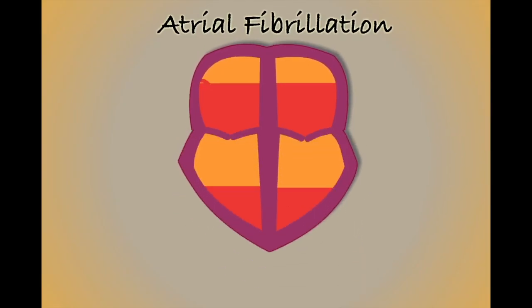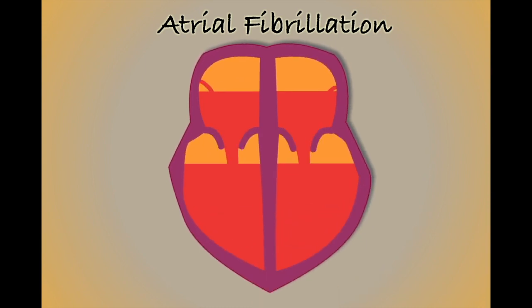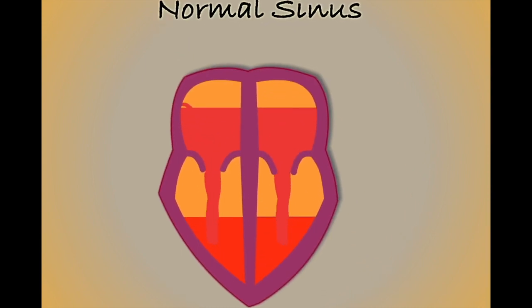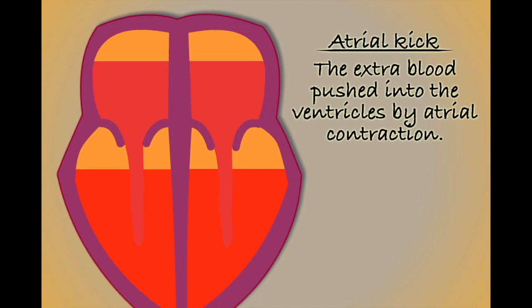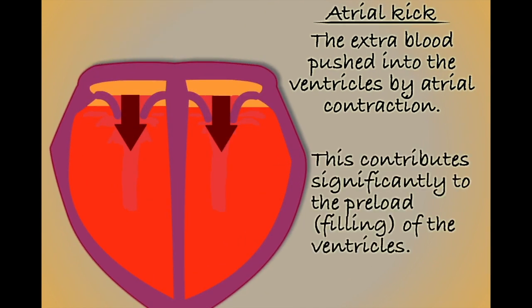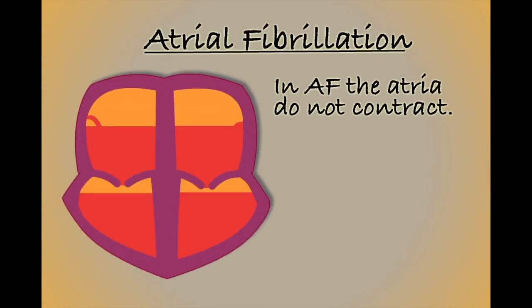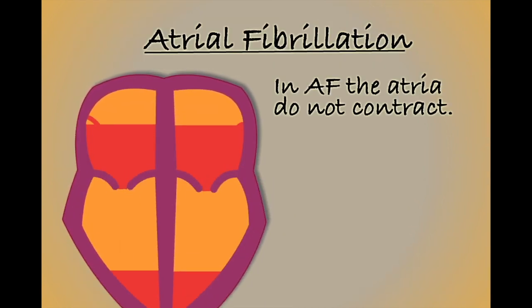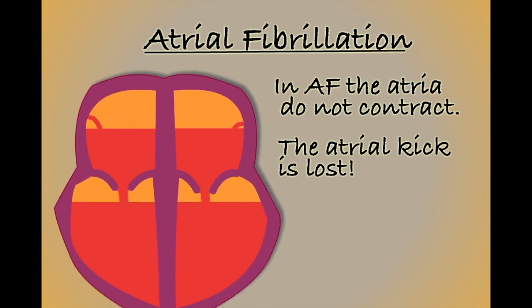One of the consequences for a heart in atrial fibrillation is the loss of the atrial kick. Atrial kick refers to the extra blood that is pushed into the ventricles on atrial contraction. This extra blood contributes significantly to the preload of the heart, increasing stroke volume by approximately 20%. As the atria don't effectively contract in AF, this atrial kick is lost, reducing stroke volume.